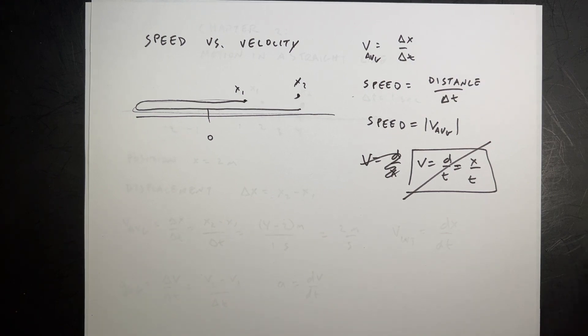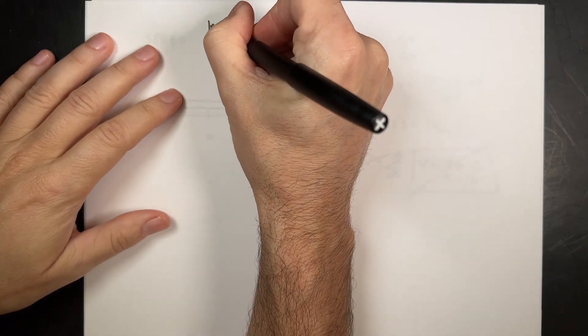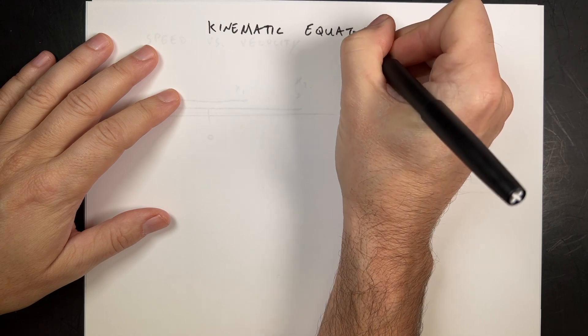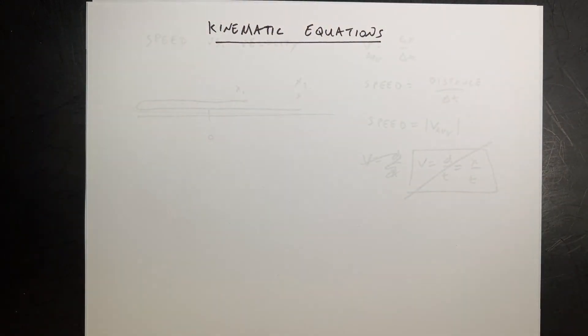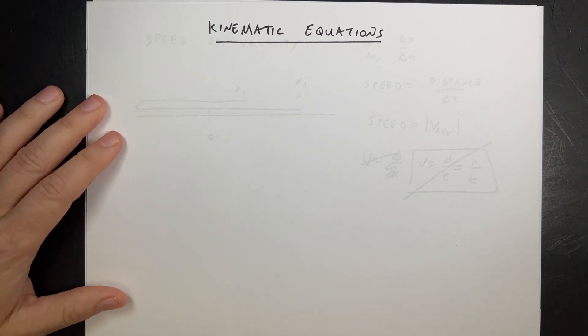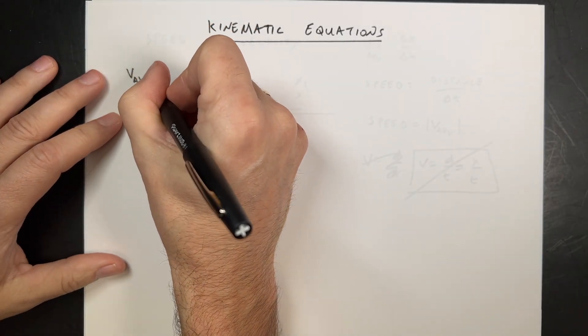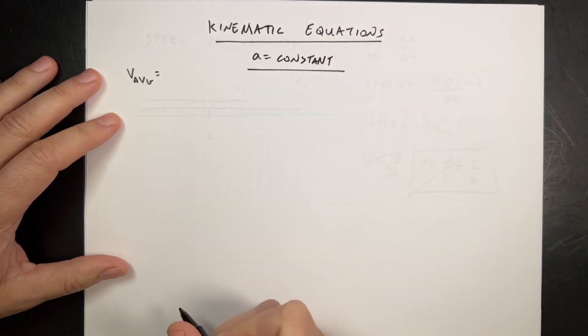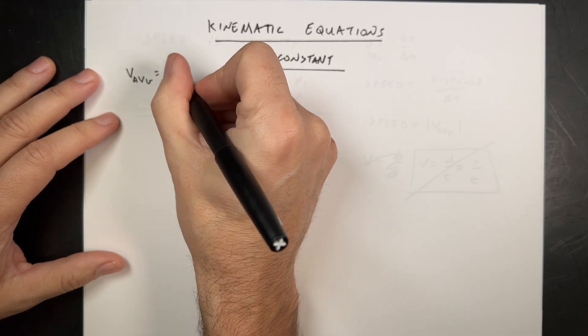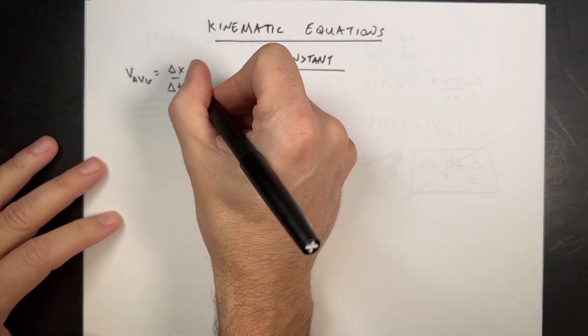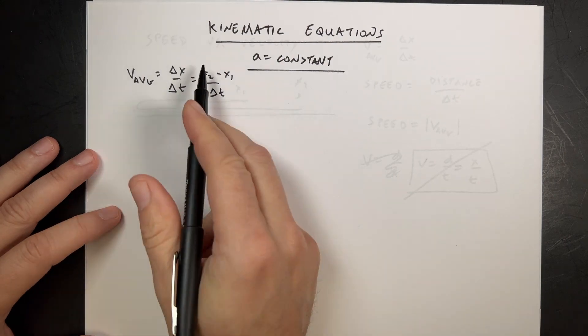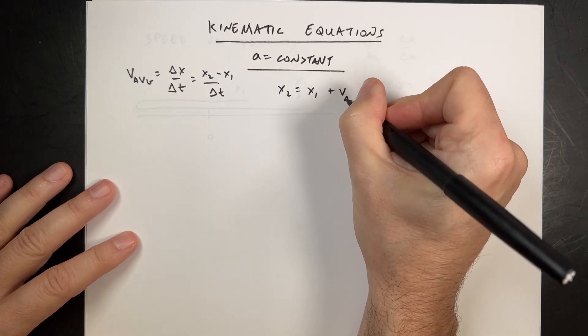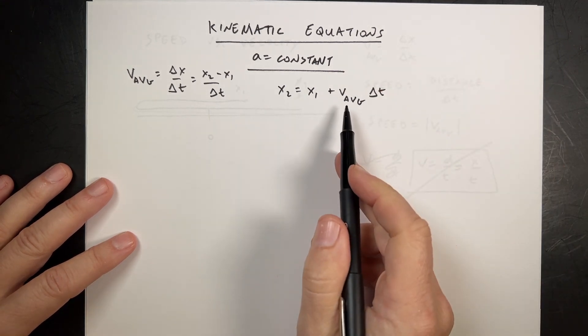Now let's get to the kinematic equations. This is a way to get relationships between position, velocity, and time. Let's start with the average velocity v_avg, and this is only true for a equals constant. The average velocity is delta x over delta t. If I consider this as x2 minus x1 over delta t, then I can solve this for x2. I can multiply both sides by delta t, add x1. I get x2 equals x1 plus v_avg delta t.